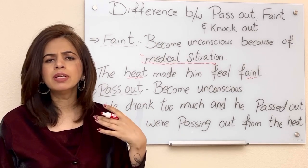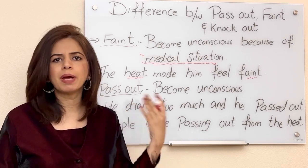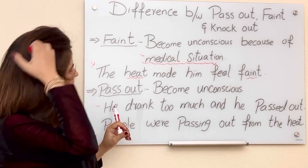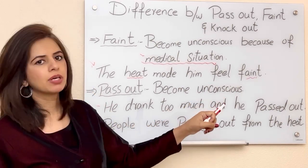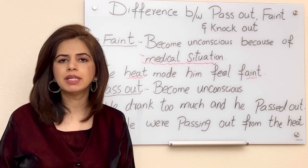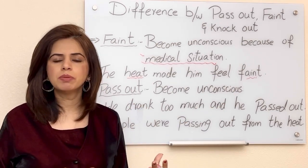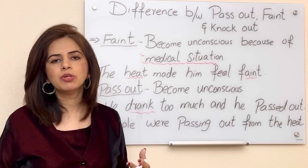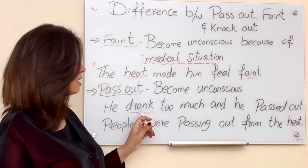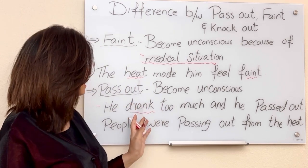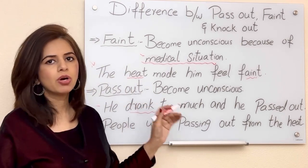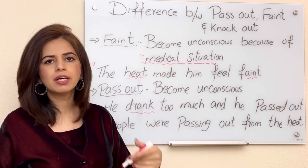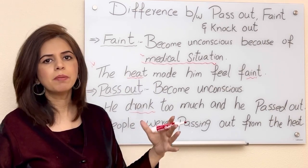If there is heat, lack of oxygen, or a medical situation, we can also use the word pass out. The example is: 'He drank too much and he passed out.' He drank a lot of alcohol and became unconscious. Here I have used pass out, not faint — I cannot say 'he drank too much and he fainted.' Faint is only used in medical situations; drinking alcohol is not a medical situation.